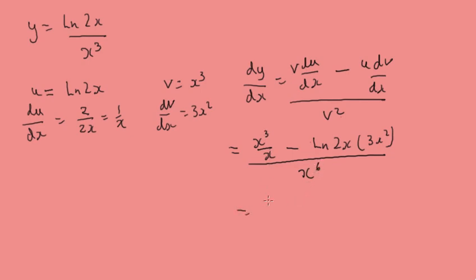This will cancel this, so we'll get x squared minus 3x squared log 2x all over x to the 6. We can take the x squareds out and simplify it, and that's going to cancel with this, so we'll have 1 minus 3 log 2x all over, the x squared that we've taken out is cancelling with that, so we'll just get x to the power of 4.